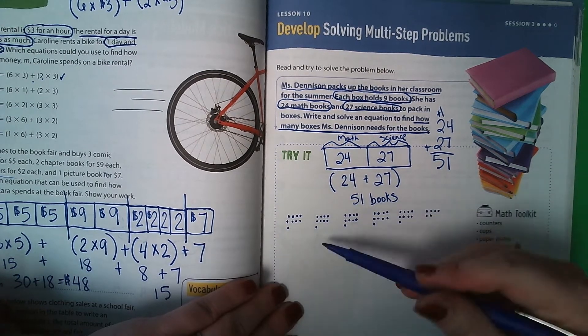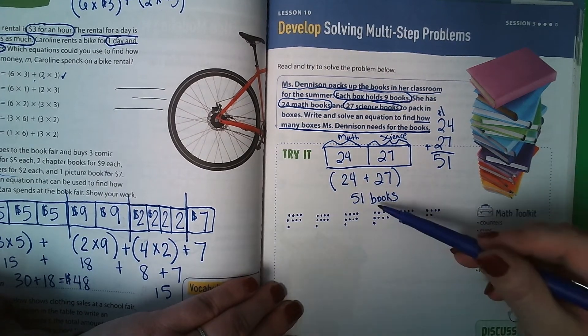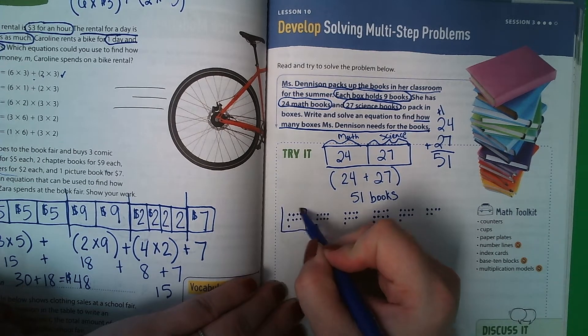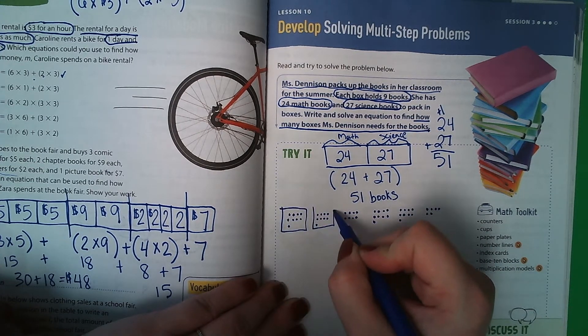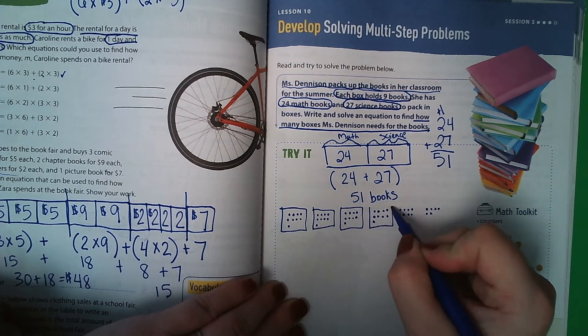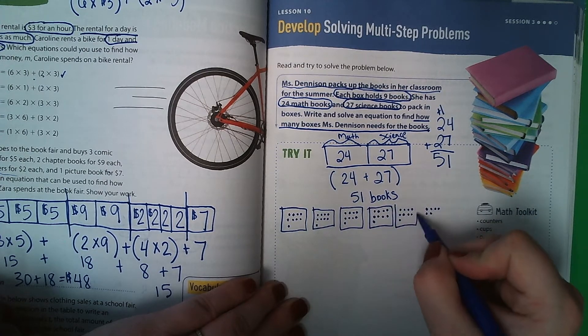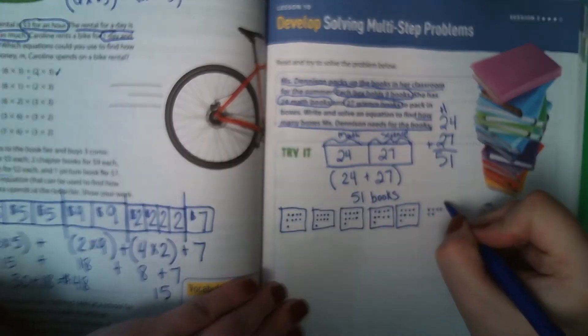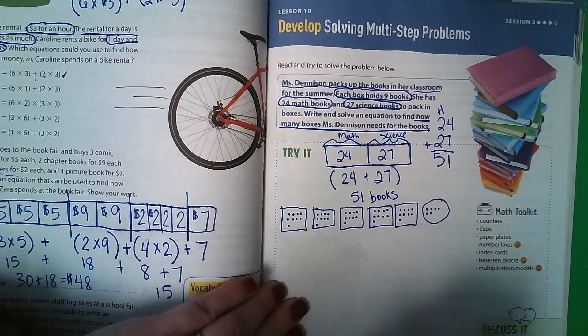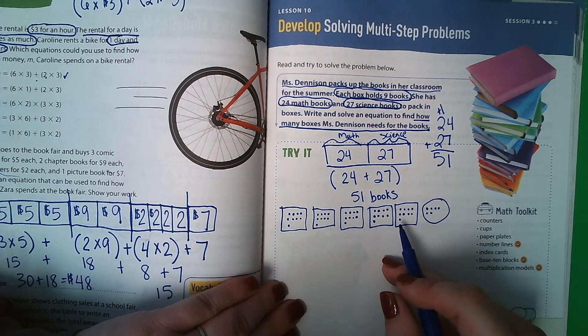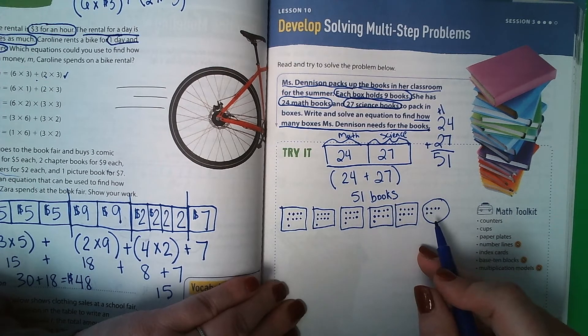So if you're going to count and do it like this, you have to stop at the total, which is 51. And then you would know that she needs 1 box, 2 box, 3 boxes, 4 boxes, 5 boxes, but this is not quite a full box. So I'm going to put a circle around it because I've got to figure out what to do with that.